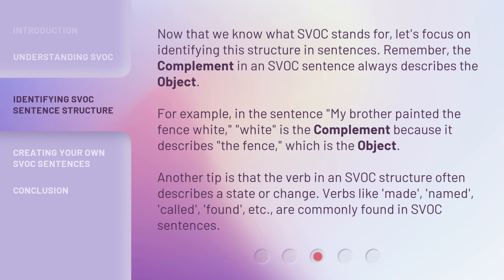Now that we know what SVOC stands for, let's focus on identifying this structure in sentences. Remember, the complement in an SVOC sentence always describes the object. For example, in the sentence 'My brother painted the fence white,' 'white' is the complement because it describes 'the fence,' which is the object.